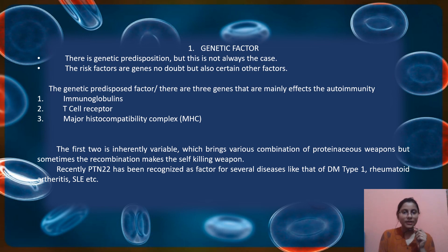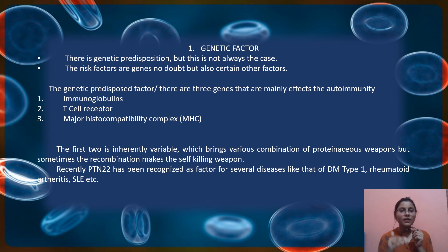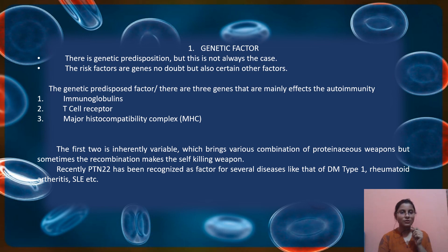The first factor is the genetic factor. For any disease there is genetic predisposition — a set of genes are predisposed, certain transcription factors initiate their transcription and translation, and the resultant protein results in disease. But genetic predisposition is not always the sole factor for autoimmunity. Genetic predisposition along with several other factors together make autoimmunity possible.